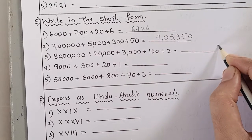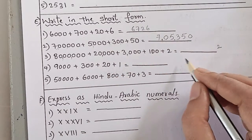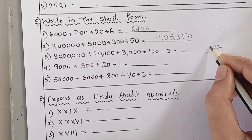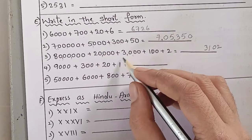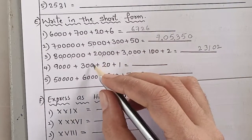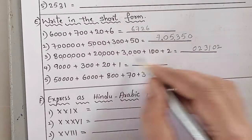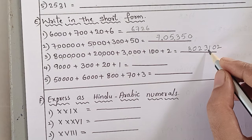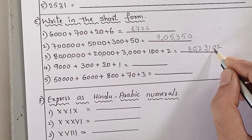In ones place we write two. Tens place is not there, so we write zero. Hundreds place: one. Thousands place: three. Ten thousands place: two. Lakhs place is not there, so we write zero. Ten lakhs place: eight. So the number is eighty lakhs, twenty-three thousand, one hundred and two.